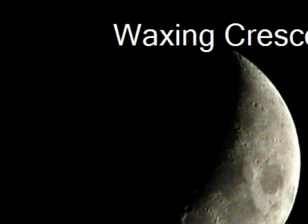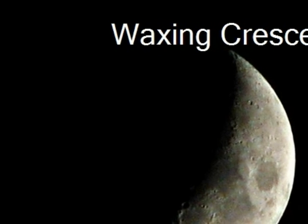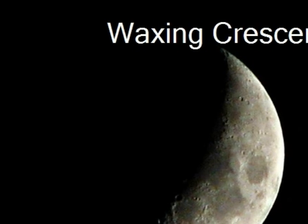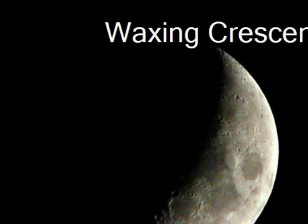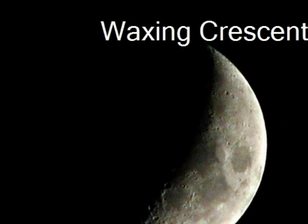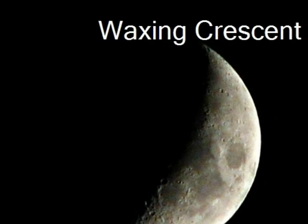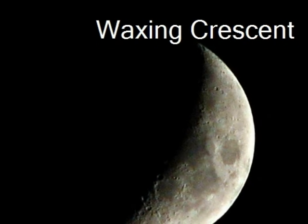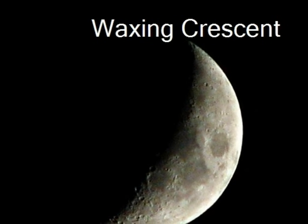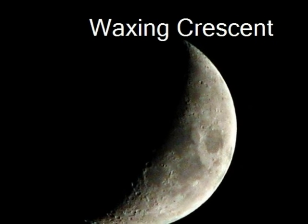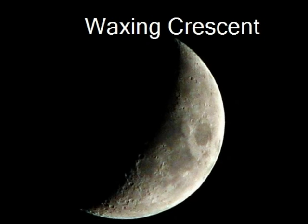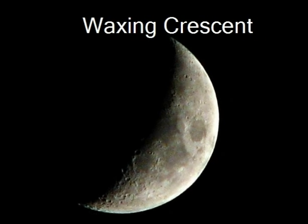Next is a waxing crescent. Waxing means the lit portion is increasing from the last phase. Crescent means that less than half of the Moon is visible. In the waxing crescent phase, the Moon is not yet half illuminated so it looks like a crescent from the Earth.